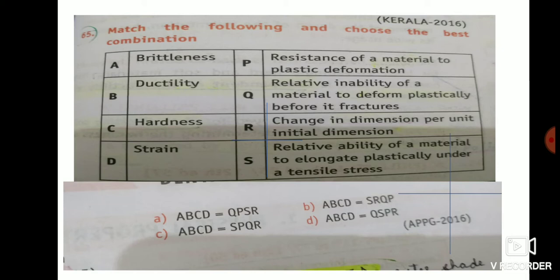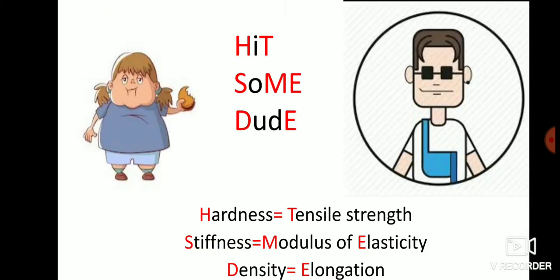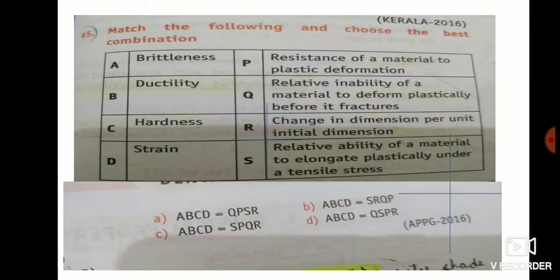Now a match-the-following question. You need to match columns A, B, C, D. From our mnemonic we know about ductility and hardness. Ductility from DUDE equals elongation. Search in the options where elongation is mentioned — you'll find option S: 'relative inability of a material to elongate plastically under tensile strain.' So ductility matches S, meaning option B in the answer choices links B to S.